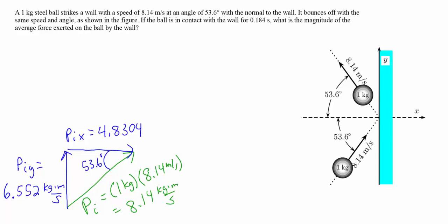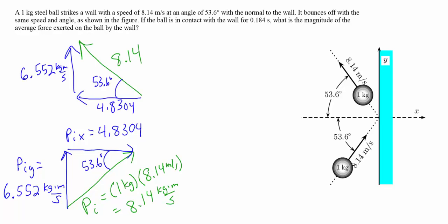Because the ball bounces off at the same speed and the same angle, the final momentum is still 8.14 kilogram meters per second, and the x and y components have the same magnitudes — except the x component is now to the left: negative 4.8304 kilogram meters per second. The y component is still upward at 6.552 kilogram meters per second.